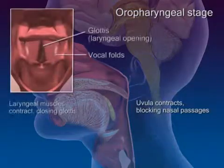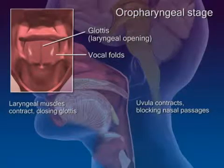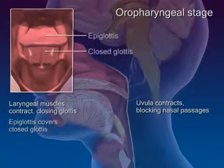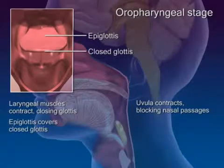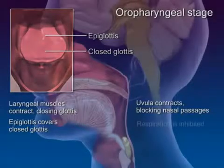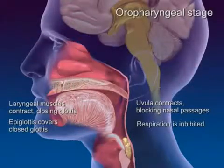The laryngeal muscles contract, closing the glottis at the top of the trachea by tightly aligning the vocal folds. The epiglottis swings down upon the closed glottis. With all airways blocked off, respiration is temporarily inhibited.